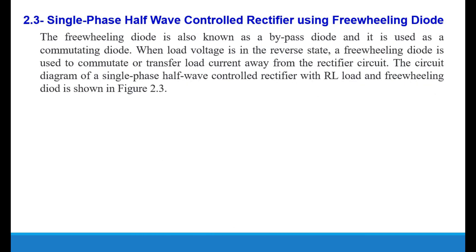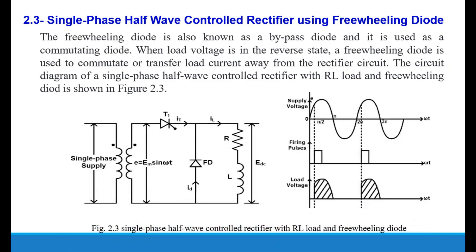Third: single phase half wave controlled rectifier using a freewheeling diode, as shown in figure 2.3. The freewheeling diode is also known as a bypass diode. It is used as a commutating diode to transfer the load current away from the rectifier circuit. The circuit diagram and output voltage and current waveform is shown in figure 2.3.